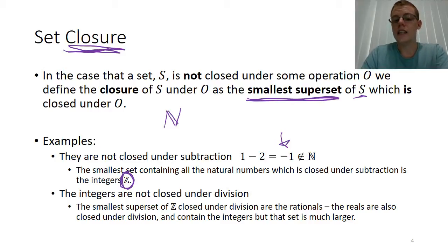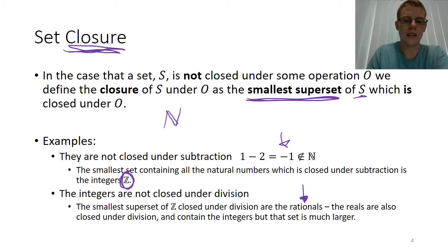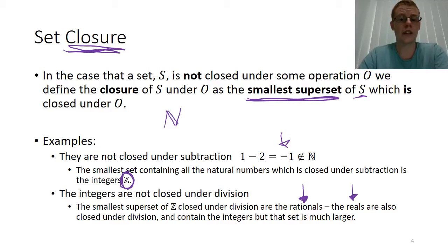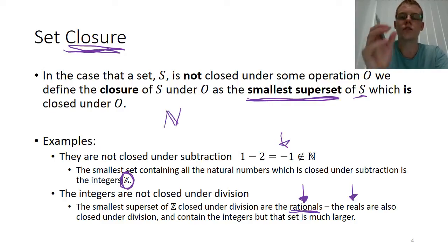We also said that the integers weren't closed under division because we end up with fractions. But if we include all of the rational numbers into that set, we do end up with something that is closed under division. We could also use the reals as a superset, since the integers are contained within the reals and the reals are closed under division. But it's not the smallest set, because there are numbers in the reals that are not necessary to close the integers. So the rationals are actually the closure of the integers under division, because it's the smallest possible superset.